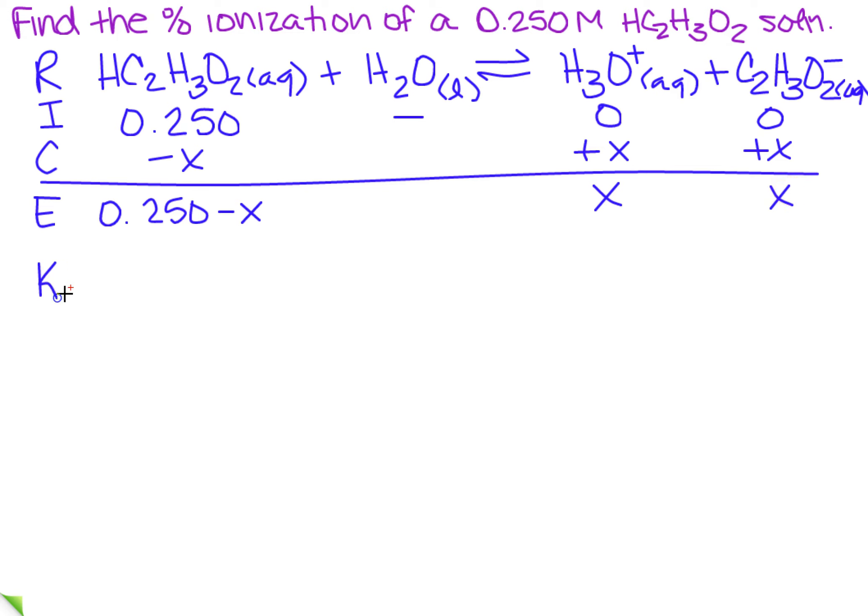So I'm going to have Ka equals. Now, remember, you need to get this number either from a table in your textbook, or if you've done a number of these, you know that it is 1.8 times 10 to the minus 5. It's kind of like some of those when you're doing naming, it just kind of sticks with you.